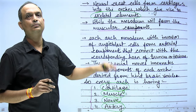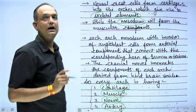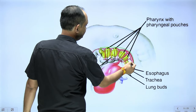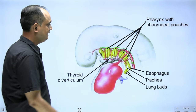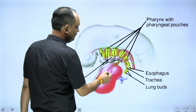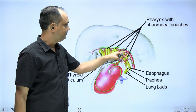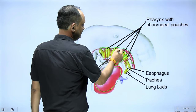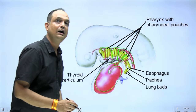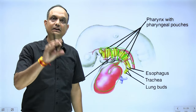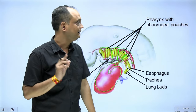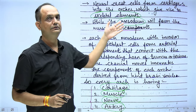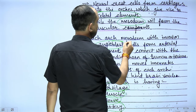The muscular component of each arch comes from the mesoderm. For the arterial component, connections form between the dorsal aorta and the truncus arteriosus passing through the pharyngeal arches — these are the arteries of the pharyngeal arches, developing from mesenchyme and angioblast cells.